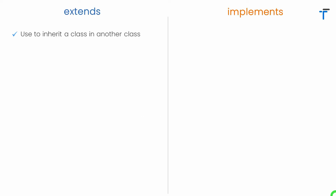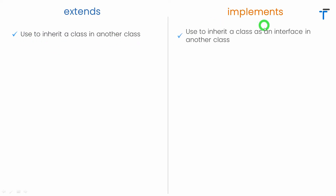When we use extends, we are basically inheriting a class in another class. And when we use the keyword implements, it means we want to inherit a class as an interface in another class. It means when we use the keyword implements, we don't want to use a class as a class or as a super class. Instead, you want to use a class as an interface for another class.